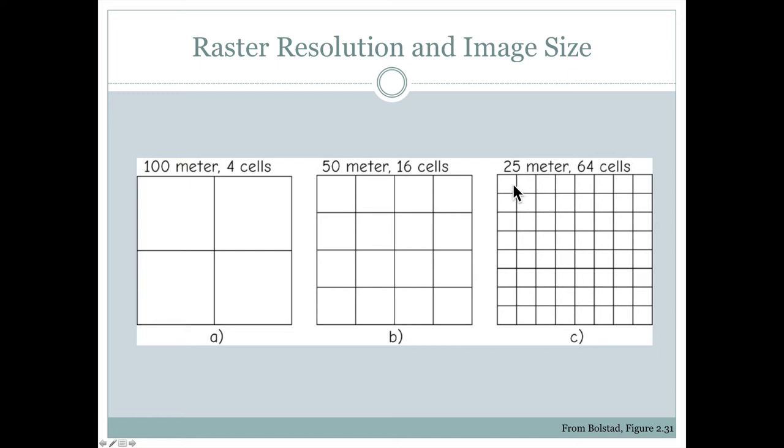And if we cut that number in half again, then we would go to 16 times four or 64 grid cells in this case.